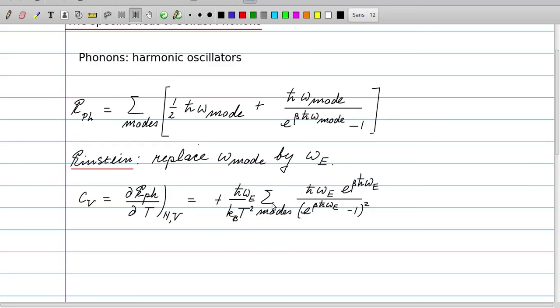It's h-bar omega_e over k_b T squared, and then we sum over all modes. Each time we have the same contribution which is h-bar omega_e e to the power beta h-bar omega_e, and then we have this term in the denominator.